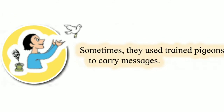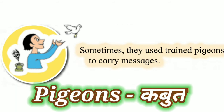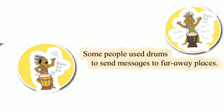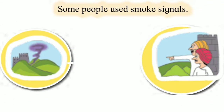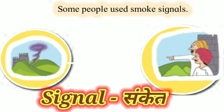Sometimes they used trained pigeons to carry messages. Trained means prashikshit — shik lele. Pigeons means kabutare. Kahi veľate sandesh nenyakarta shik voleli kabutare vaaprit asad. Some people used drums to send messages to faraway places. Some people used smoke signals — smoke means dhur and signal means sanket.